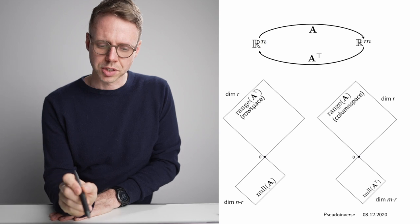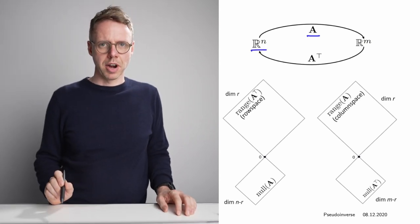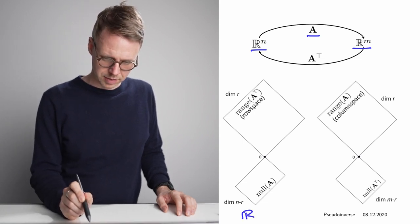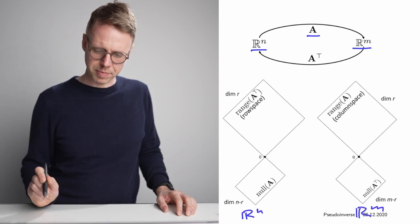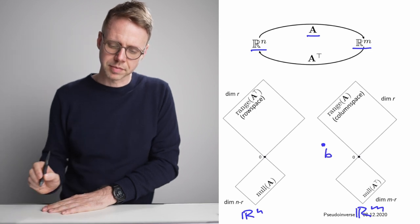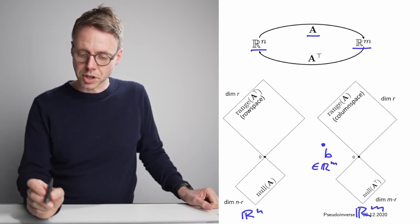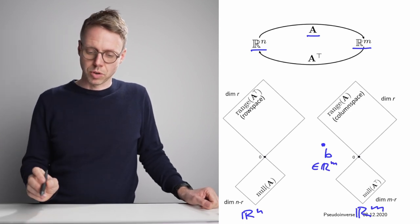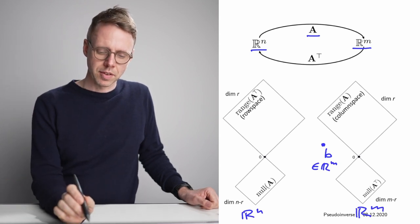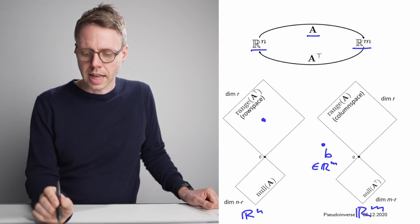We start with a matrix A that defines a linear map — a function that goes from R^n to R^m. On one side we have R^n, on the right side R^m. In addition to A, we're also given a vector B, an element of R^m. So we are on the right side, but not necessarily on the column space or the null space of A transpose. What we're looking for is some vector X that, if we multiply it by A, we end up as close as possible to B.